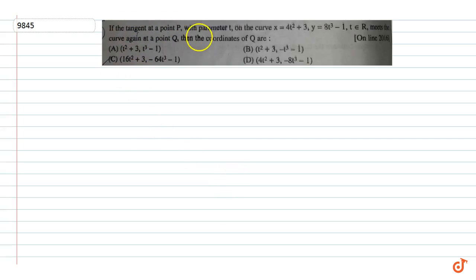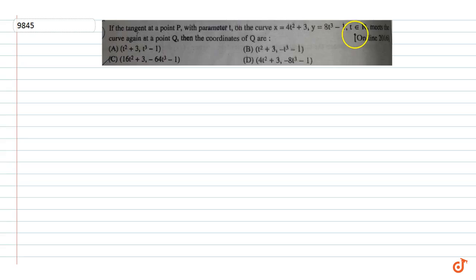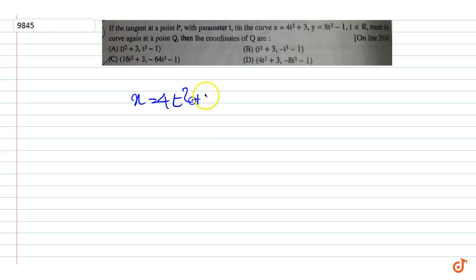In this question, if the tangent at the point P with parameter t1 on the curve x equal to 4t squared plus 3, y equal to 8t cubed minus 1, where t is an element of R, meets the curve again at the point Q, then the coordinates of Q are to be found. Here x is equal to 4t squared plus 3.